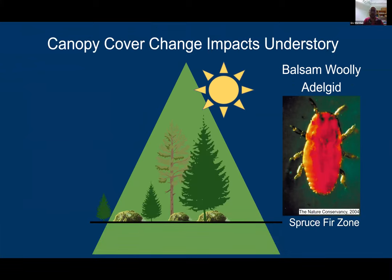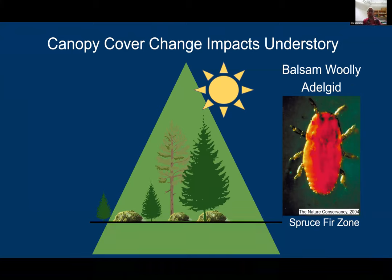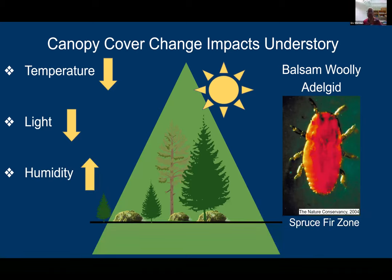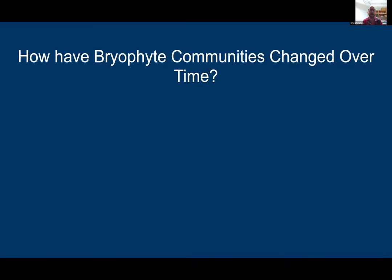Since then, a few studies have shown a general recovery of fir trees in these high-elevation ecosystems. With this increase in canopy cover, we would expect the microclimate to have a decrease in temperature, a decrease in light availability, and an increase in humidity — all of which can negatively or, in some instances, positively impact the bryophytes in the understory. This begs the question of how bryophyte communities have changed over time.